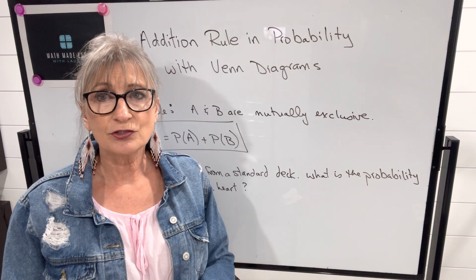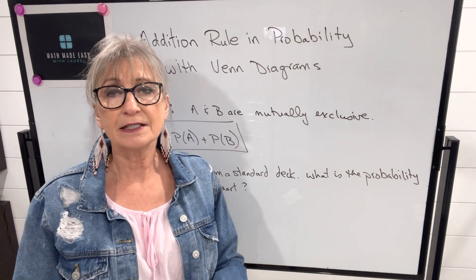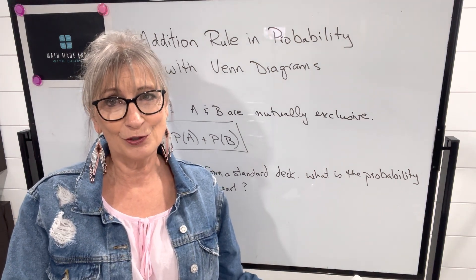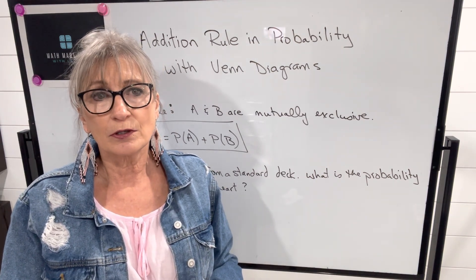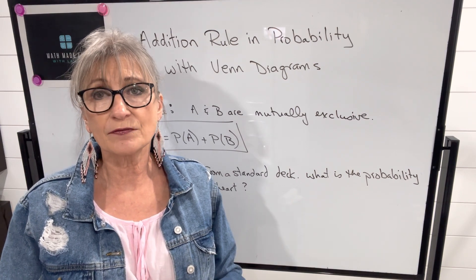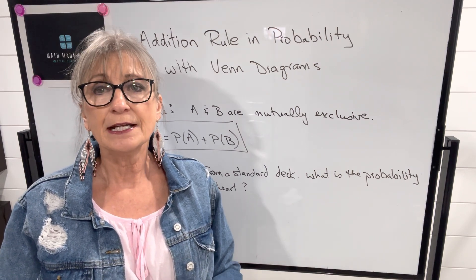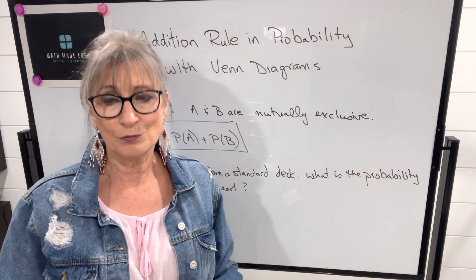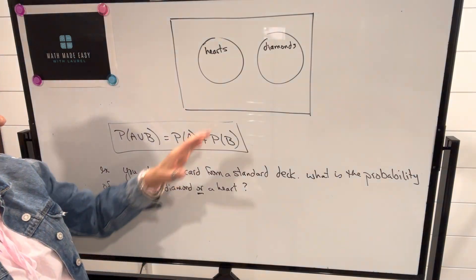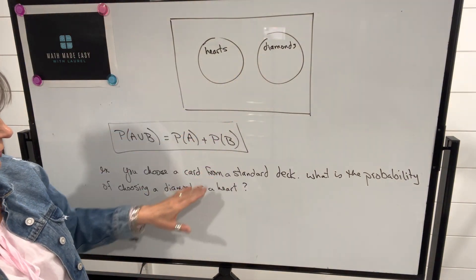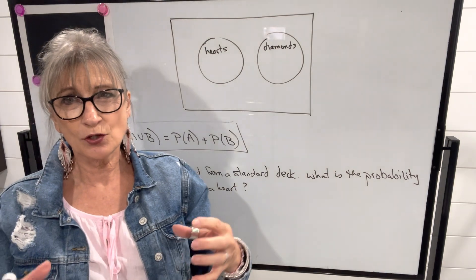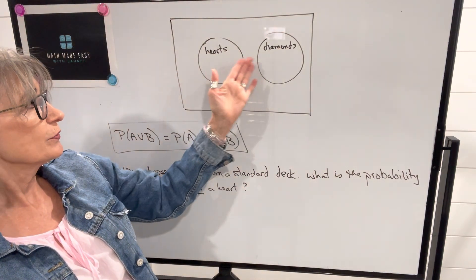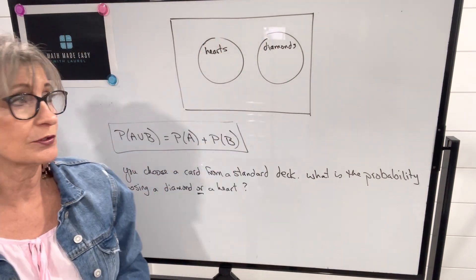I'm going to show this information and the probabilities in a Venn diagram. I've talked about Venn diagrams in a previous video where we used them to organize numbers of elements in a group. Now we're going to use Venn diagrams to organize the probabilities of various groups. Because these two groups, A and B, which are hearts and diamonds, are mutually exclusive, they don't intersect at all — there are no common elements to both. So they don't overlap, and we have two separate circles to represent them.